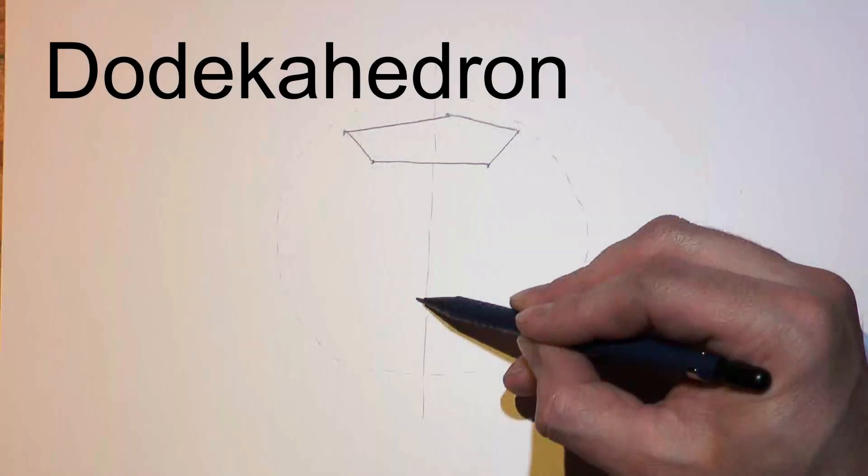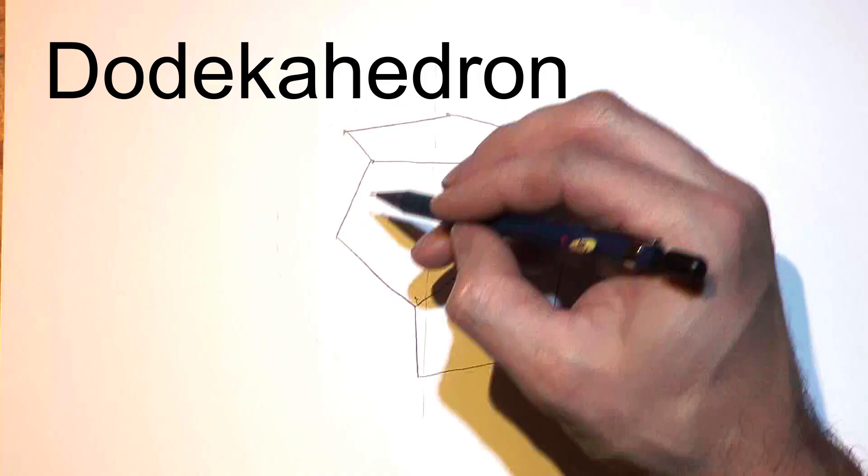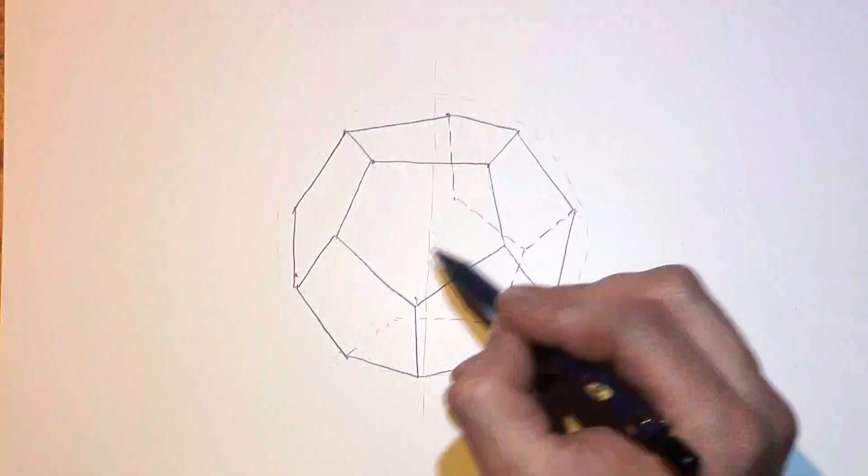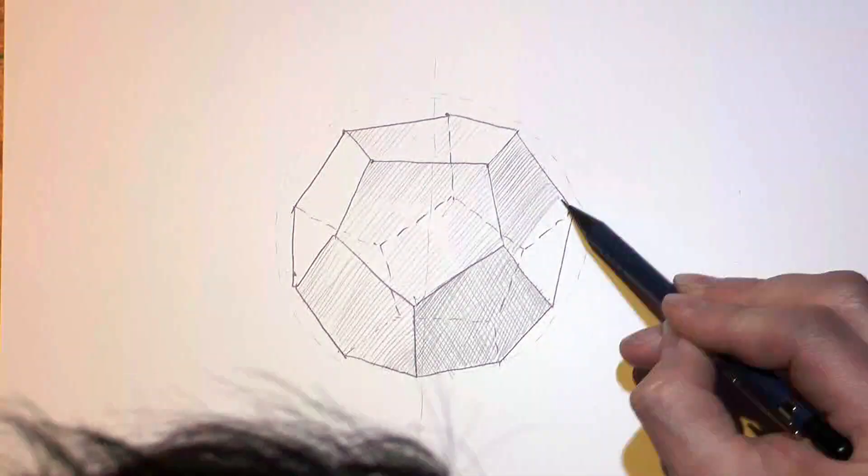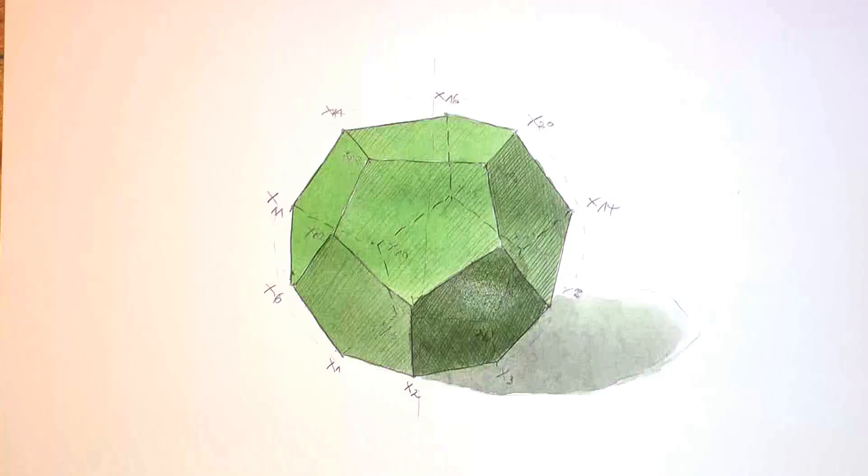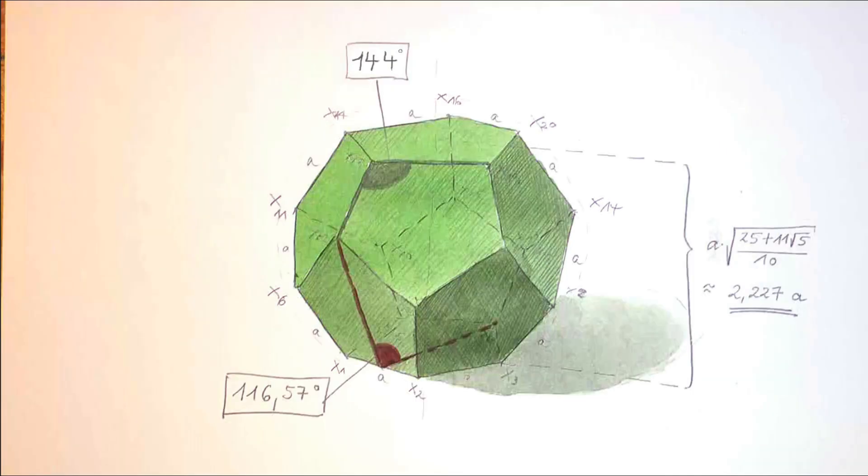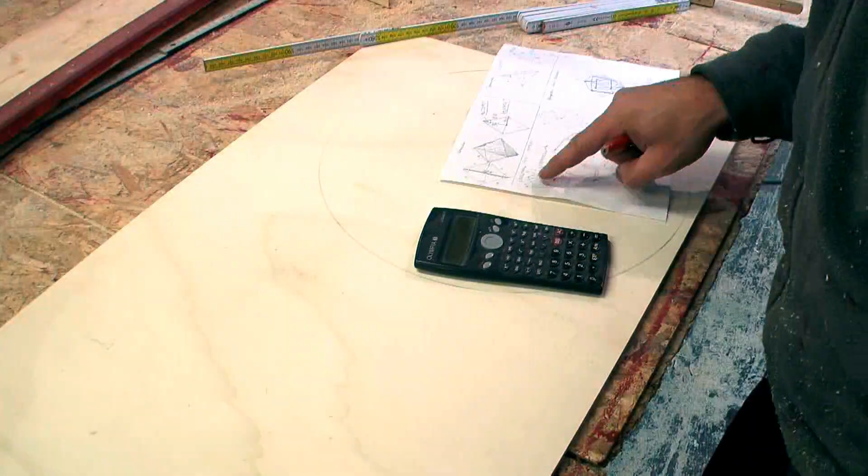You already knew that we are facing much more trouble with the next one, the dodecahedron. Important for us are of course the angle between the faces, which is 116.6 degrees, and the distance between two opposite faces, which is 2.23 times the length of the edges.